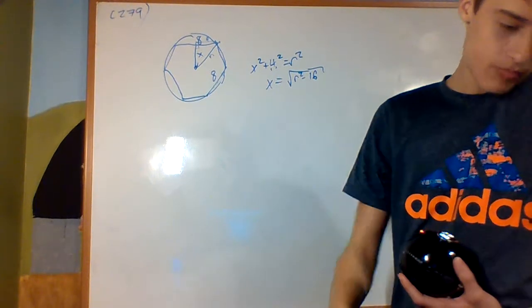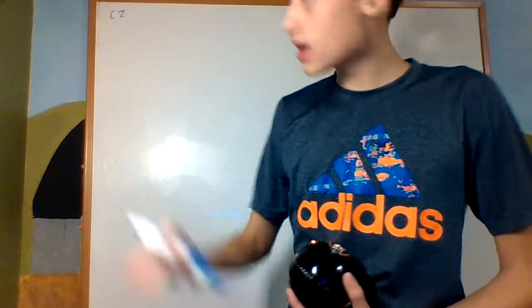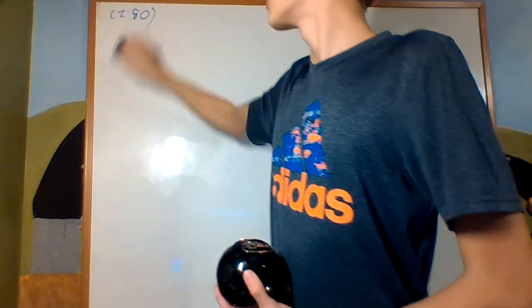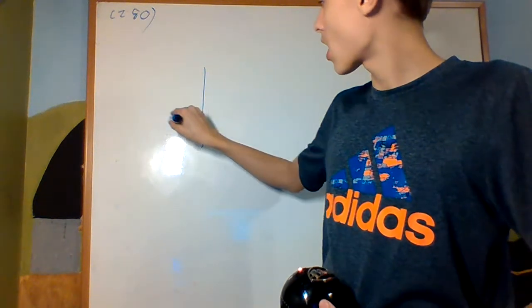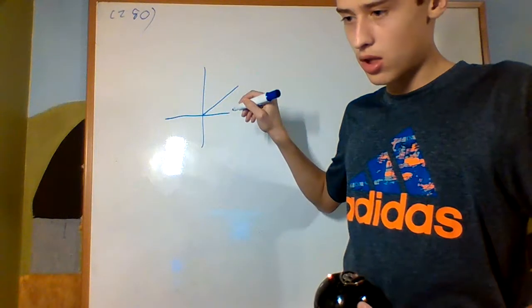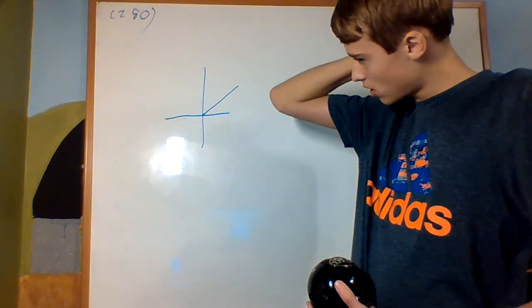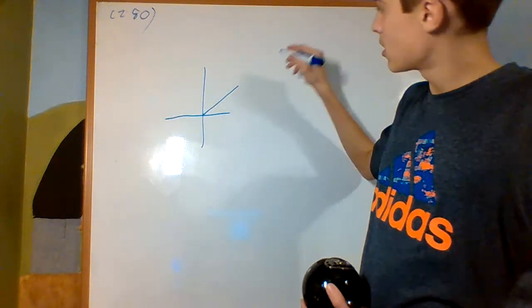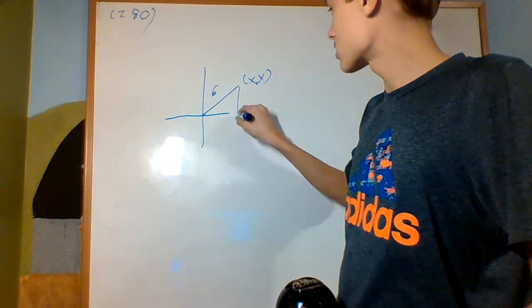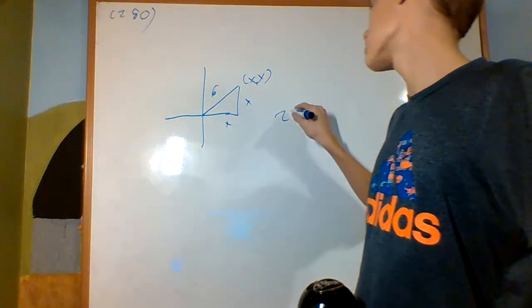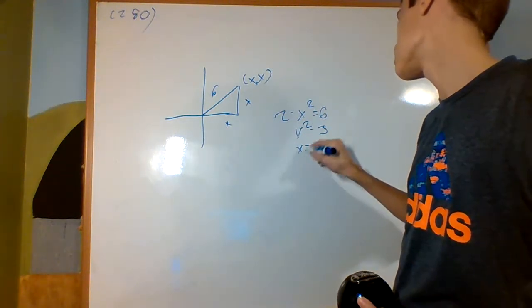Problem 280: a square with side 6 and diagonal X. Using the Pythagorean theorem: 2X squared equals 6 squared... X squared equals 3, so X equals the square root of 3.